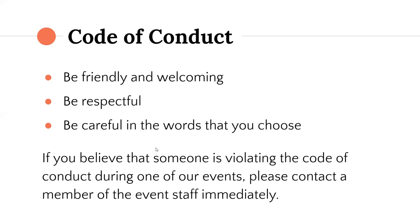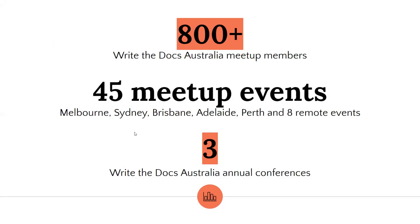A word on the code of conduct: make sure you're friendly and welcoming in your speech. Be respectful and be careful in the words that you choose. If you believe someone's violating the code of conduct — and it applies to remote events as well — if you see or hear something that violates the code of conduct, contact a member of the staff. Write the Docs Australia now has over 800 members, built over the last four years.